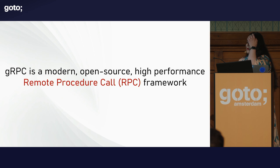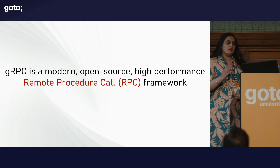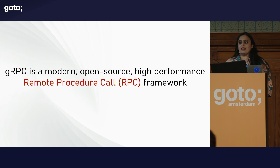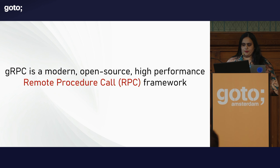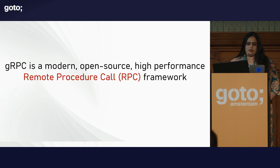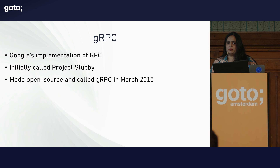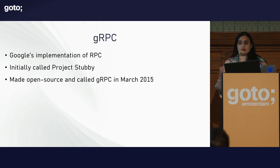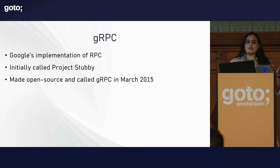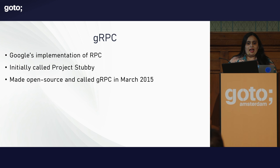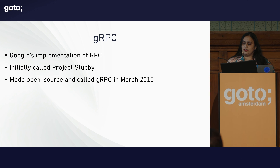Straight into the topic: gRPC is a modern, open-source, high-performance remote procedure call framework. That's straight out of the docs. A little bit of history: it's Google's implementation of RPC. Remote procedure call frameworks are not new — they date back to the 1970s or 80s. But gRPC — Google Remote Procedure Call — is pretty new. It was called Project Stubby, and it was made open-source and called gRPC in March 2015.